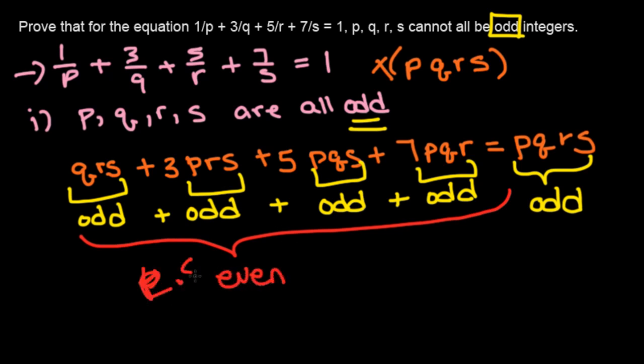So that's the left side. But on the right side, we have pqrs, which is odd. Since the left side is even and the right side is odd, this is a contradiction.